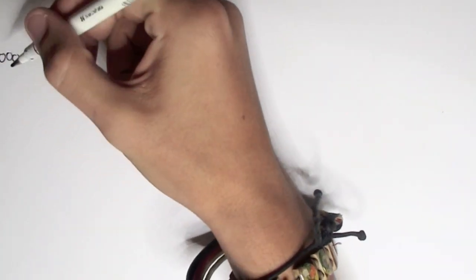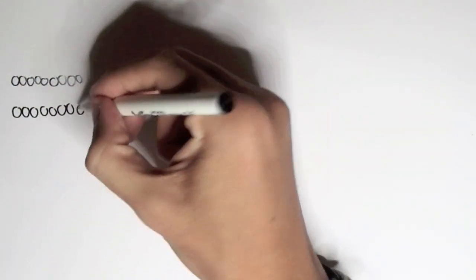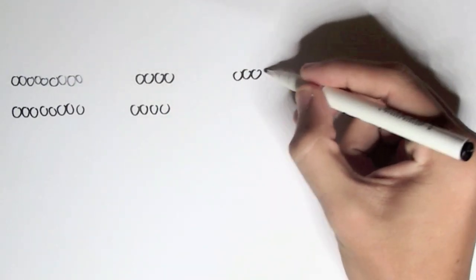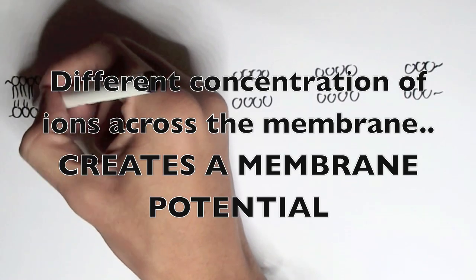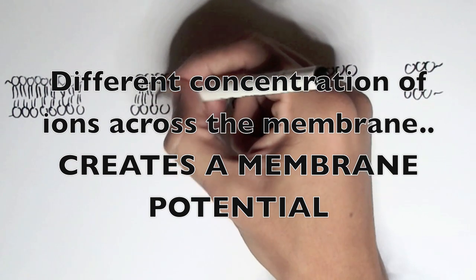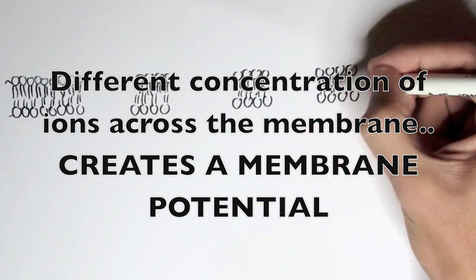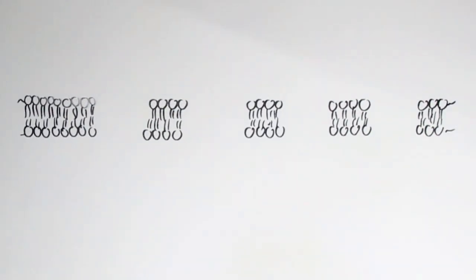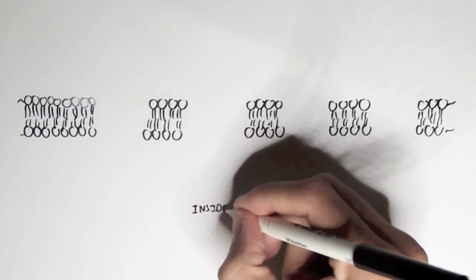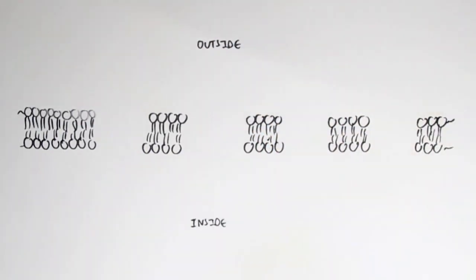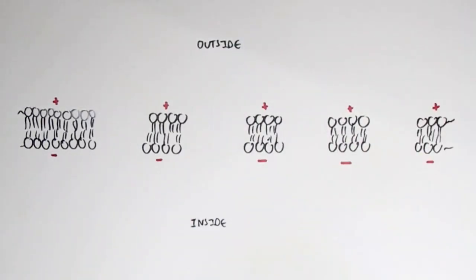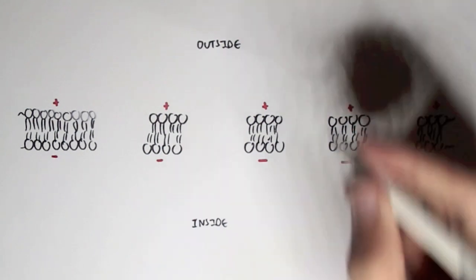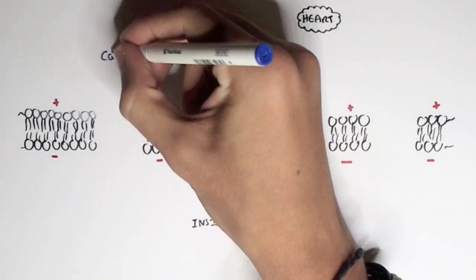Here we have a cell membrane — for now we'll say it's a cardiac muscle cell or cells within the heart. The cells within the heart have a membrane potential, which is the difference in electrical potential between the inside and the outside of the cell. This is due to the different concentration of ions across the membrane. In the heart cells at rest — essentially just after the heart has finished pumping blood out — the inside of the cell membrane is negative with respect to the outside, so the membrane potential is usually negative.